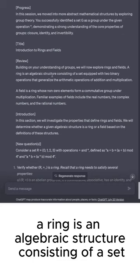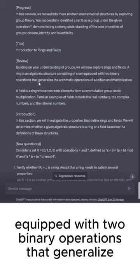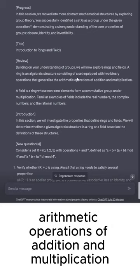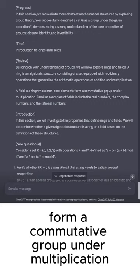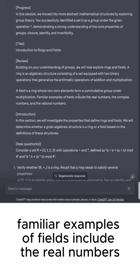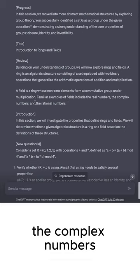A ring is an algebraic structure consisting of a set equipped with two binary operations that generalize the arithmetic operations of addition and multiplication. A field is a ring whose non-zero elements form a commutative group under multiplication. Familiar examples of fields include the real numbers, the complex numbers, and the rational numbers.